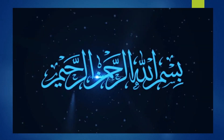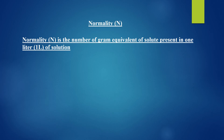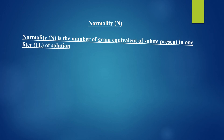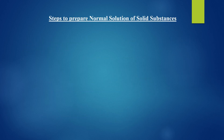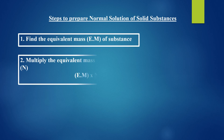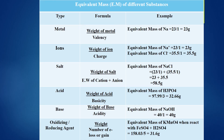In the previous video, we discussed what is normality and the formulas of normality. I also discussed that for preparation of a normal solution of any solid substance, always follow these three steps. I also explained how we can find the equivalent mass of a metal, ion, salt, acid, base, and oxidizing or reducing agents. Let's have a quick look over it.